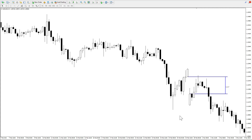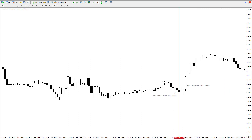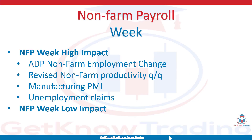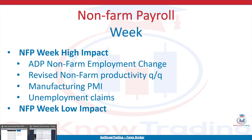NFP week is the week when the non-farm payroll is published and when the market is waiting for Friday to see the results. The most important day that week is NFP Friday at 8:30 am Eastern time and 12:30 pm GMT winter time. During NFP week you can also see lots of other related information, such as ADP NFP change, revised non-farm productivity, manufacturing PMI, and unemployment claims. The NFP week is full of data that affects the markets.